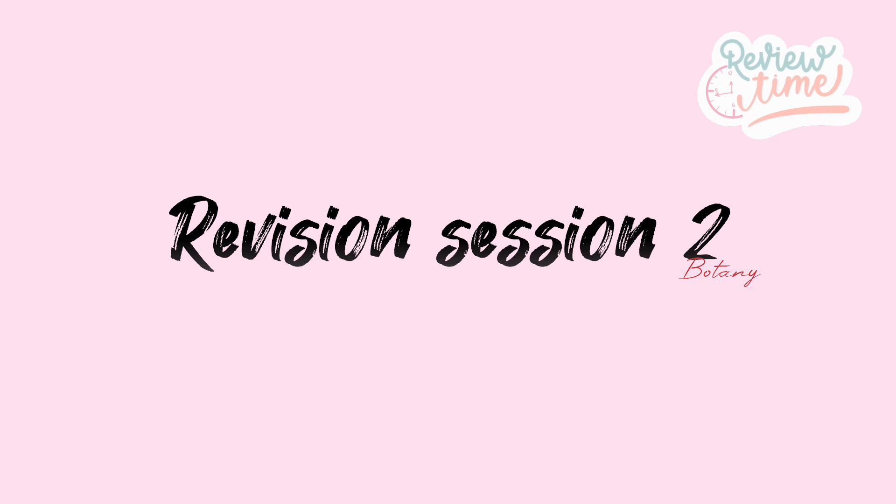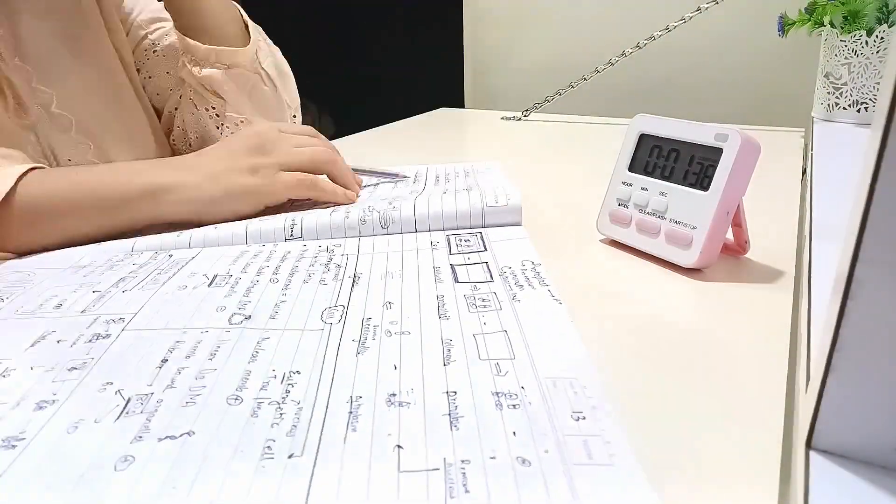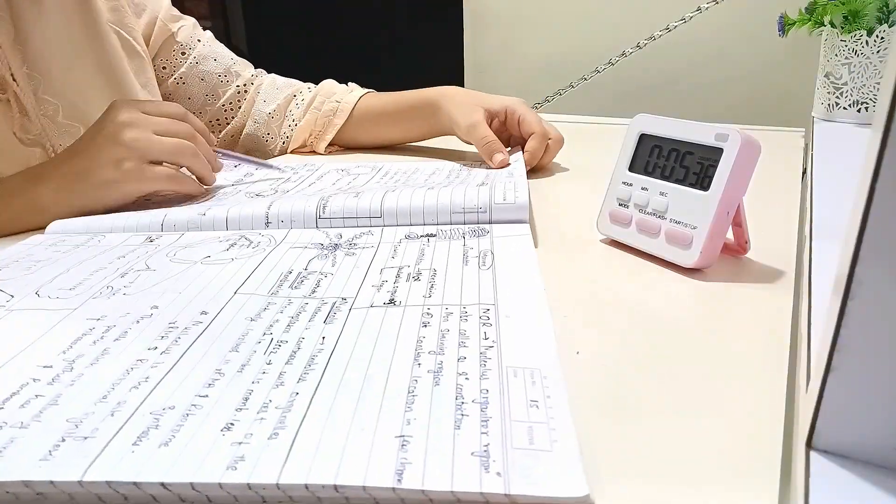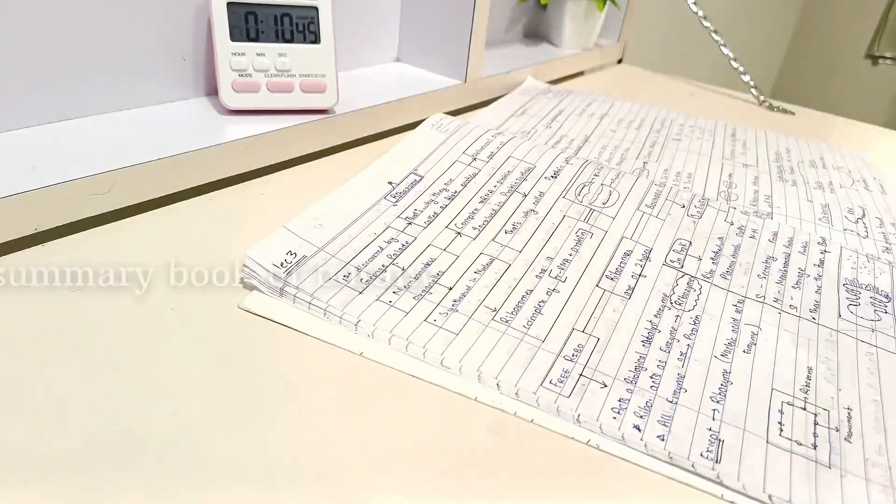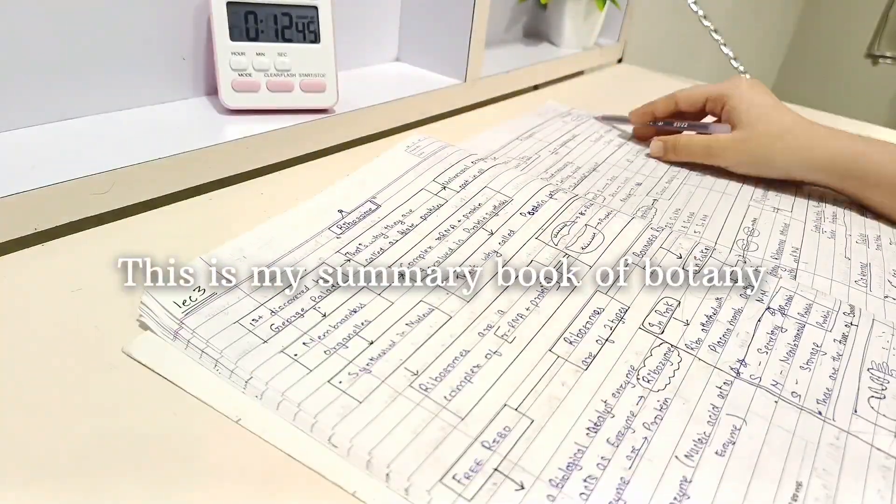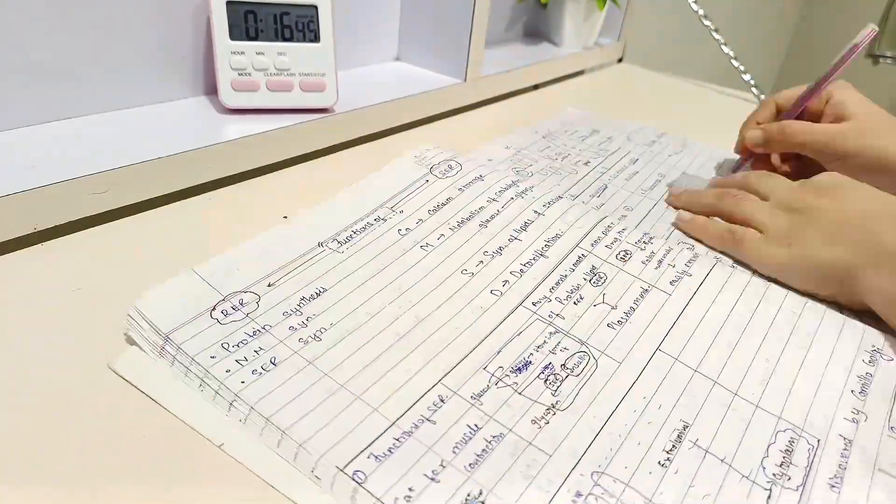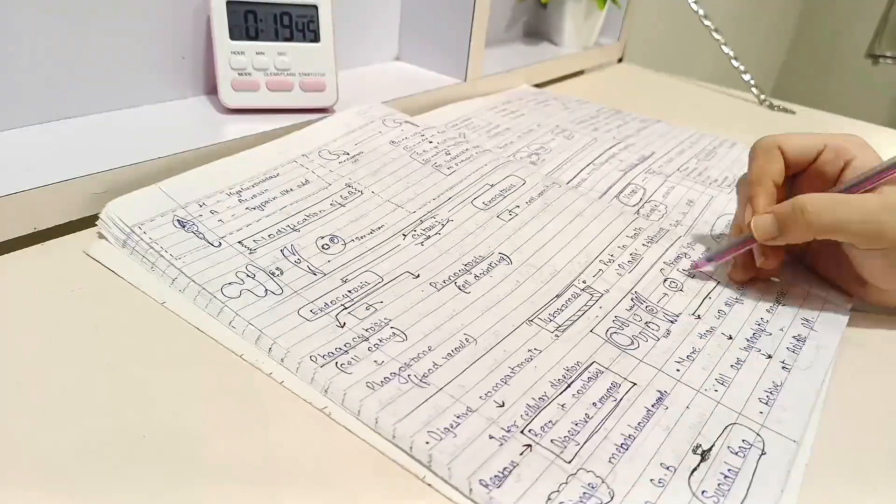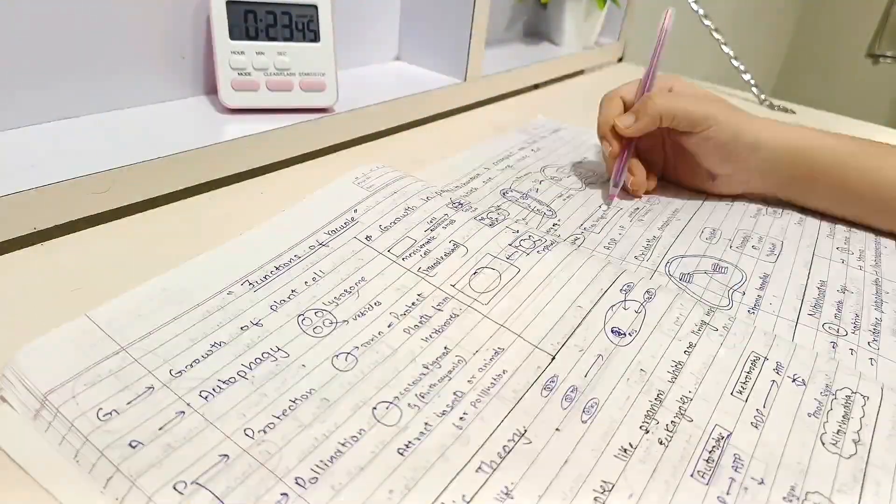So after completing the revision session one for physics, now it's time to start the revision session two for botany - cell, the unit of life chapter. And as you all know, this chapter has too many things that has to be remembered, so I thought to revise the chapter first before solving any questions. Because it's always very useless and time-consuming if you solve the questions first in biology if you aren't thorough with the chapter.